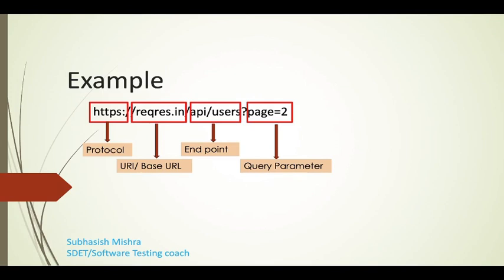Here I will show an example of a RESTful API URL. HTTPS is the protocol. The base URL or URI is where we are going to send our request. The endpoint — for example, /api/users — will change for each API while the base URL remains the same. The query parameter is a condition or filter specifying what kind of data you are trying to fetch.